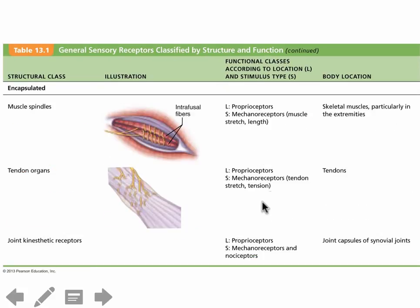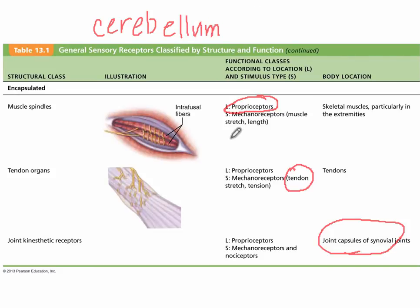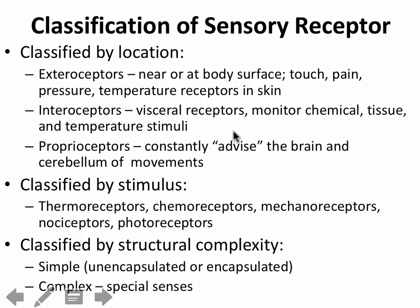This next slide shows two types of proprioceptors. Proprioceptors sense information about muscle stretch, muscle length, tendon stretch and length, and joint capsules. They constantly send information to the cerebellum, which — as covered in the central nervous system chapter — continuously receives information from the body and makes decisions about the next best muscle movement.